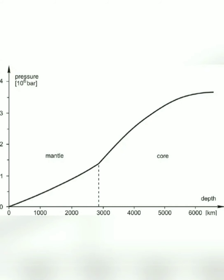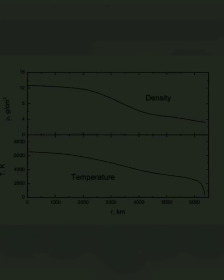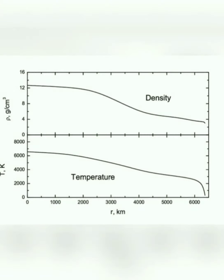The next graph shows pressure inside the earth. Near the surface the pressure is 14.7 pounds per square inch, and it increases with depth. When it goes to the core, the pressure will be 33.5 million pounds per square inch. So just like temperature, pressure also increases according to depth.